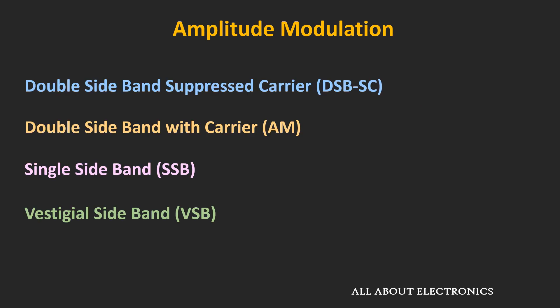Depending on the frequency spectra of the modulated signal, Amplitude Modulation can be further classified into four categories: first, double sideband suppressed carrier, commonly known as DSBSC; second, double sideband with carrier, conventionally known as Amplitude Modulation; third, single sideband modulation; and fourth, vestigial sideband modulation. In this video, we will learn about DSBSC — the double sideband suppressed carrier.